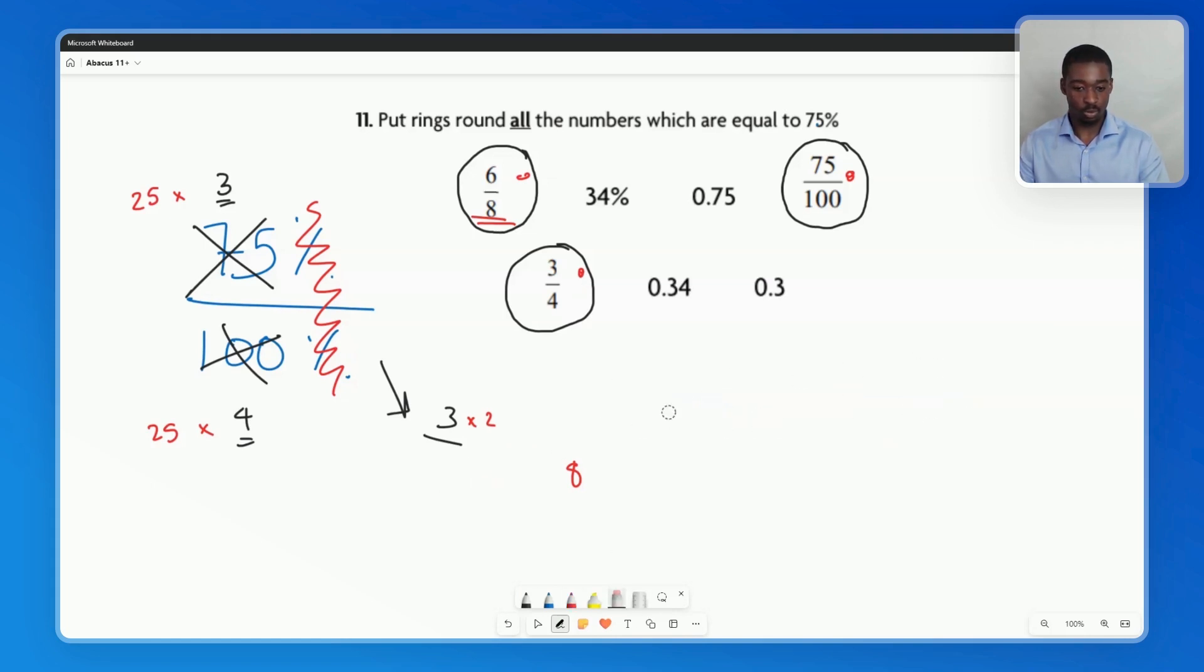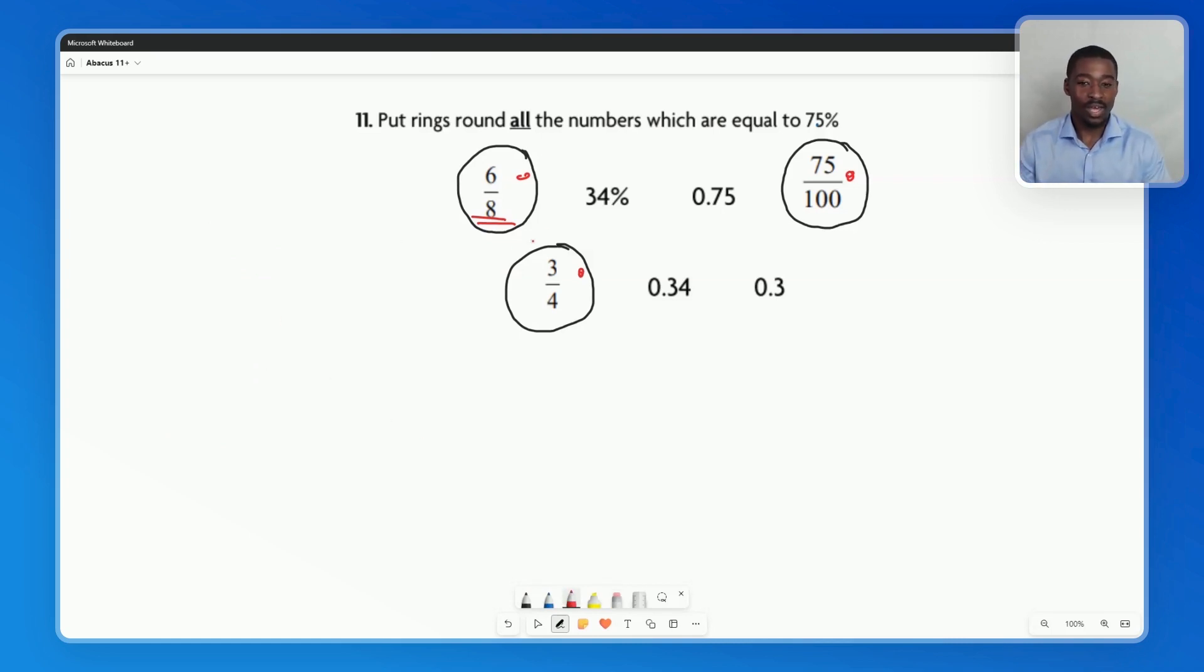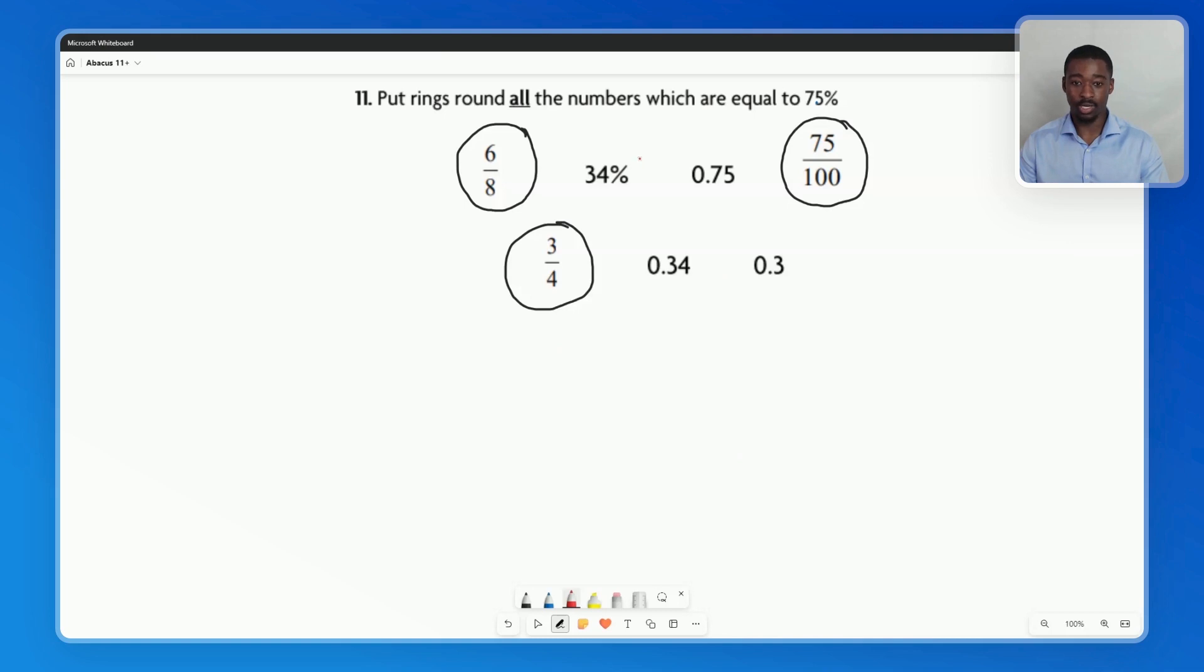But then we move on to decimals. We have some decimals, and we need to know whether or not these are equal to 75%. So now how do we go from percentage to decimal? Well, that's why it's so important to know how to first go from percentage to fraction, because once we get to fraction, we can go really easily to decimal. Let's take 75 over 100. Now let's look at the rest of these numbers. We know already that 34% is not equal to 75%, so we're left with these three decimals. So how can we work this out? Well, again, we're going to need to use conversion. But what's really helpful is once we already know how to go from percentage to fraction, it becomes super easy to go from fraction to decimal. So let's take the fraction form of 75%, 75 over 100.